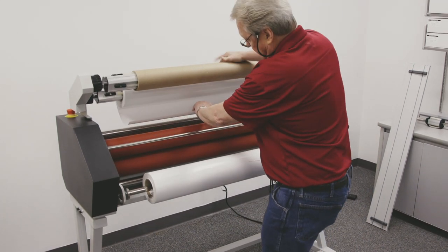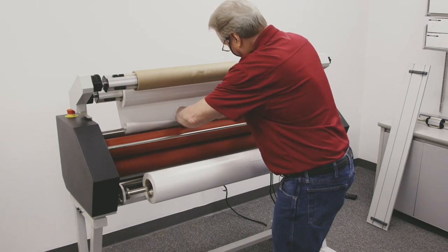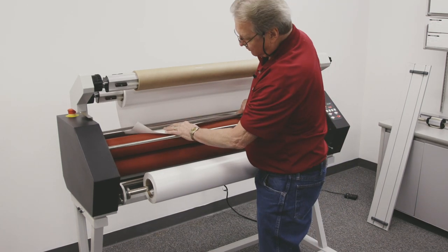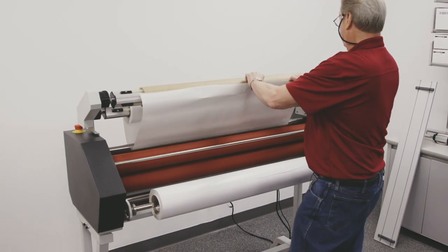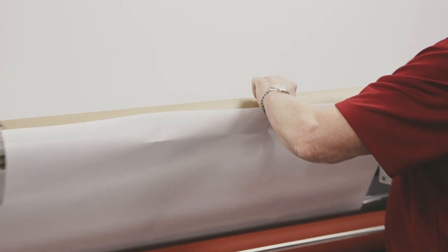Now what I do is bring my film underneath the idler bar and I'm going to bring it up and we'll attach it to the rewind tube. I'm going to line that up.